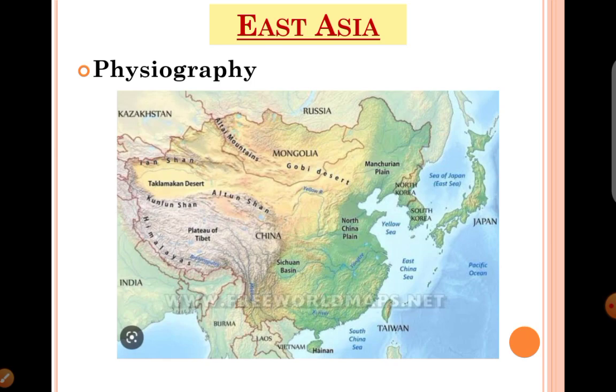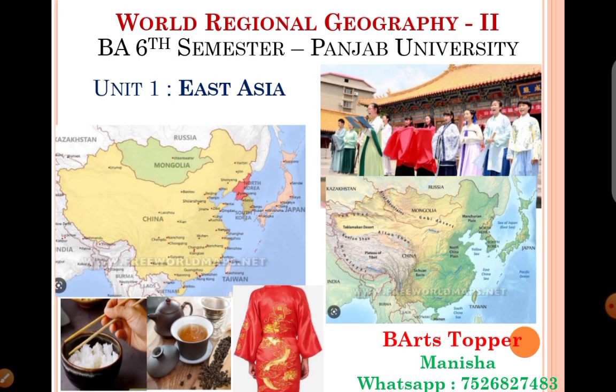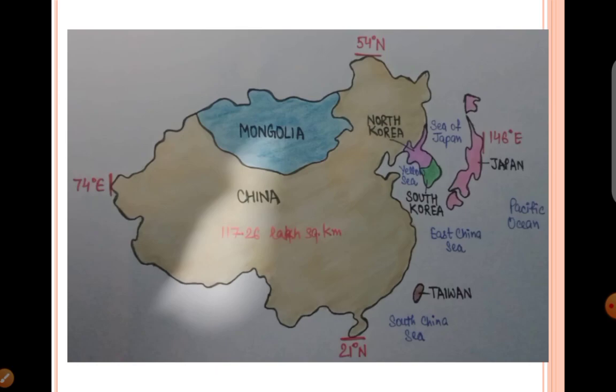Today we will discuss the first part of East Asia. Before this, let me introduce you to the region of East Asia. The region of East Asia is the eastern part of Asia. There are six countries included: China, Mongolia, Taiwan, North Korea, South Korea, and Japan. These six countries form the East Asia region. Here you will find the Mongolian race, also called the yellow race, dominating all these countries.